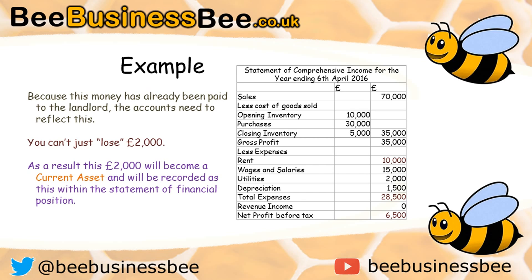That £2,000 needs to go somewhere and needs to be reflected and shown. What we have to do is use the other document, which is our Statement of Financial Position, or the balance sheet as it's sometimes called, and we have to record the £2,000 as what's called a current asset. In simple terms, these are items we own that can be turned into cash within a year — in this case, we paid £2,000 and we're due that back within a year. So we have to amend our current assets to reflect that. I will look at that in more detail in a future video.